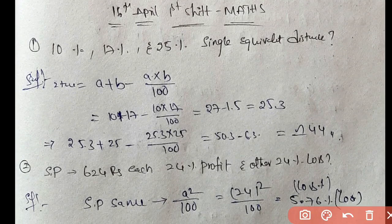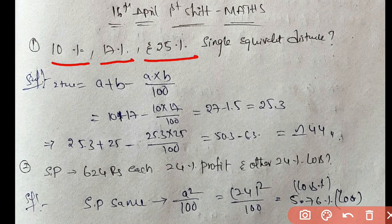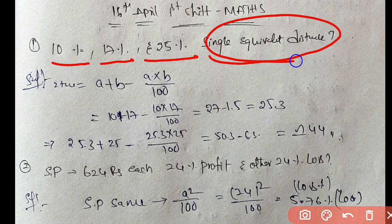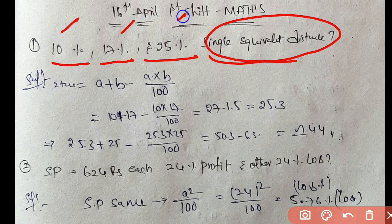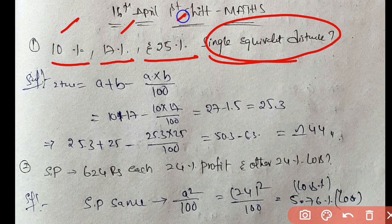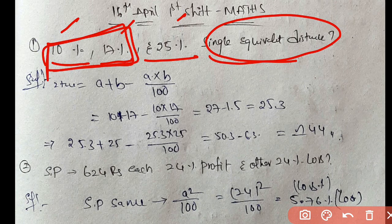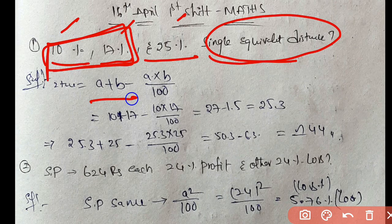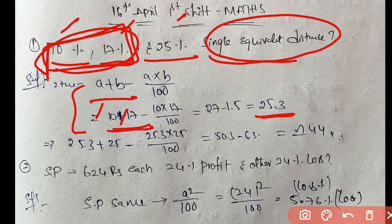Mathematics questions. First question: 10%, 17%, and 25% successive discounts, what is the single equivalent discount? For two values, single discount formula is a plus b minus ab divided by 100. First, 10 and 17 gives 23.5, then with 25, approximately 44% equivalent discount.